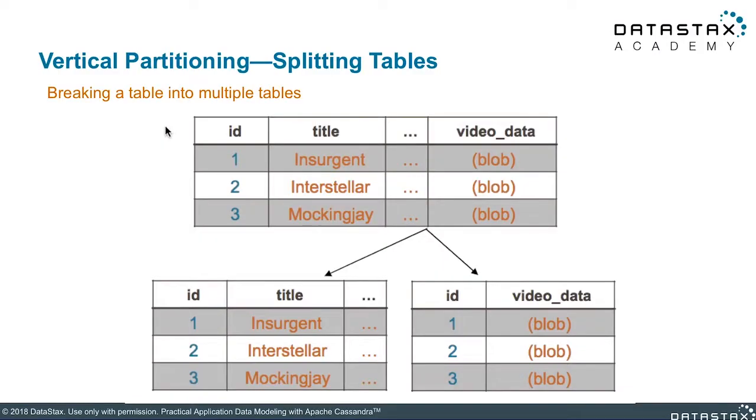Be careful to ensure that you don't lose or orphan records in either table while performing the split. For example, if we are not careful in our application, we can store Interstellar's metadata but fail to also store its streaming blob, or vice versa. Also, ensure that you don't require client-side joins when splitting a table. Splitting the streaming blob here seems like a good choice, but if we never allow users to view video metadata without watching the video in the same action, we force our application to do two queries instead of one.